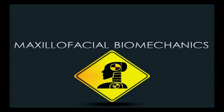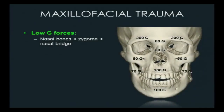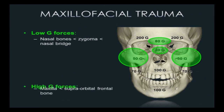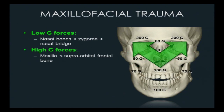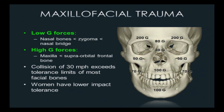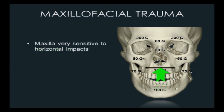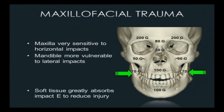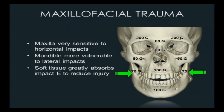Let's talk about biomechanics and areas susceptible to low G forces, which happen in interpersonal assaults with a fist. These tend to be the prominent areas of the face: the nose and cheekbones. Higher G forces from a car crash or significant fall are needed to fracture the maxilla and frontal bones. A 30 mph crash will overcome all of these numbers. The maxilla is sensitive to horizontal impact; the mandible is more vulnerable to a lateral impact, so a right or left hook is more likely to break the mandible.